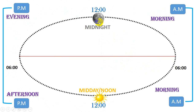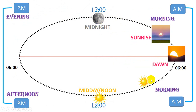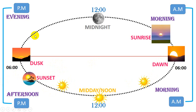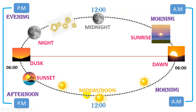Now look at this picture. At 12 midnight you will clearly see the moon, and after some time the sun will rise and then it will be dawn. In the morning you will see the sun, and at 12 o'clock midday or noon the sun will be at its highest point. After that the sun will start to set, and eventually in the evening you will see the stars and the moon. So when the time is after 12 o'clock midnight, that will be AM, and after 12 midday it will be PM.